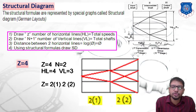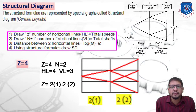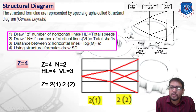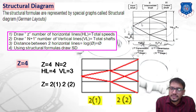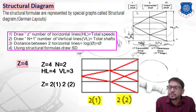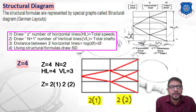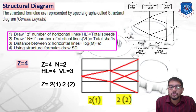The first step to draw a structural diagram is to draw Z number of horizontal lines, representing the total speeds. So if we have a six-speed gearbox, we need to draw six horizontal lines, representing speeds n1, n2, n3, n4, n5, n6. Similarly, we need to draw n plus 1 number of vertical lines, representing the total shafts.